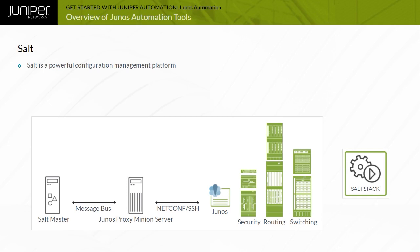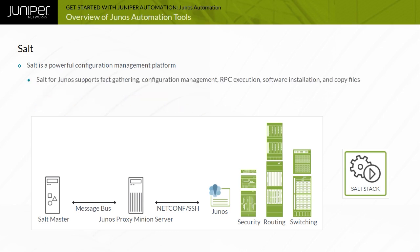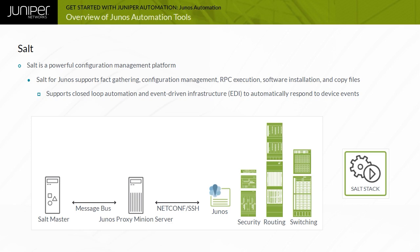Salt is a powerful configuration management platform created and maintained by the SaltStack company. It was purchased by VMware in 2020. Salt enables you to define the desired state of a system and enforce that state on managed devices. You can also use Salt to execute commands on remote devices. It is Python-based and utilizes a Salt Proxy minion to connect to Junos devices. The Salt Proxy minion supports the ability to gather facts from Junos devices, manage and commit configurations, execute RPCs and CLI commands, install software, and copy files. Salt is event-driven and popular for Junos platforms because of its ability to perform event-driven closed-loop automation.